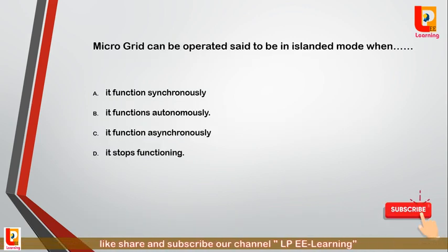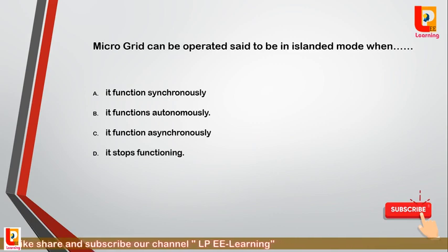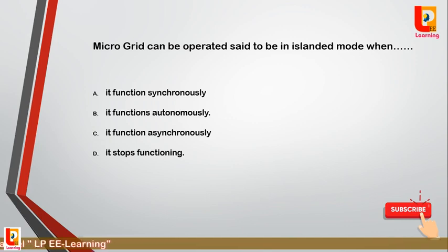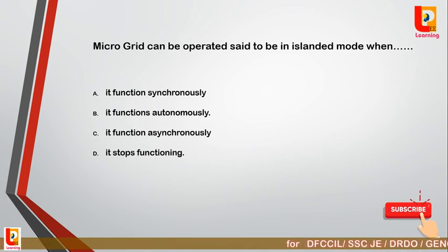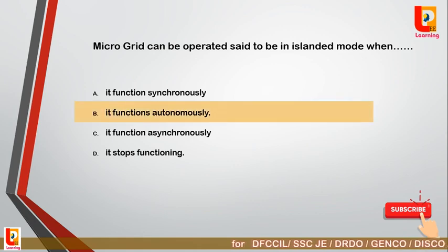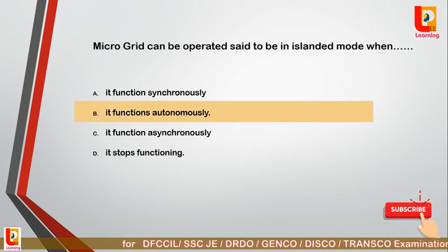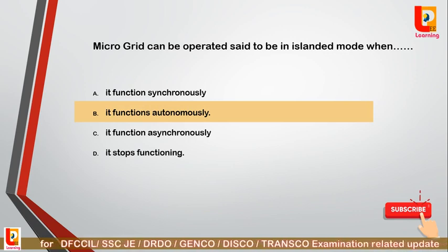Question 18: Micro grid can be said to be operated in island mode when — option A: it functions synchronously; option B: it functions autonomously; option D: it stops functioning. Correct answer is option B: it functions autonomously. A micro grid is said to be in island mode when it functions autonomously.